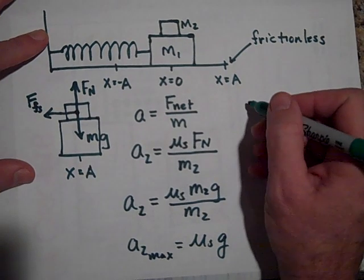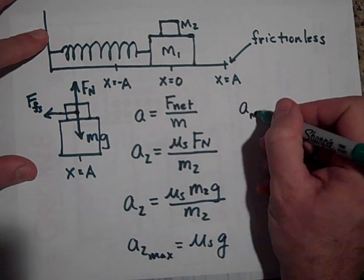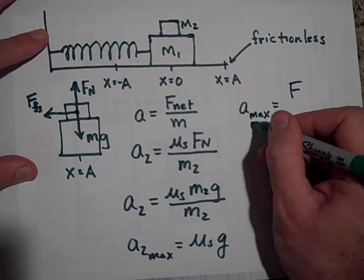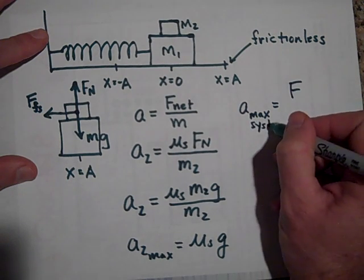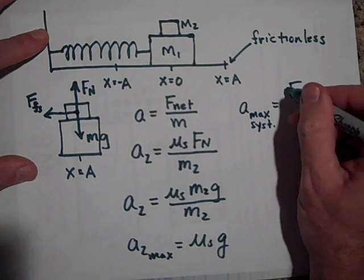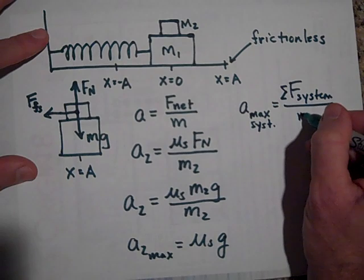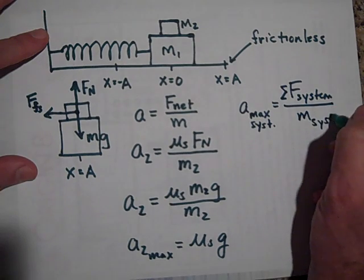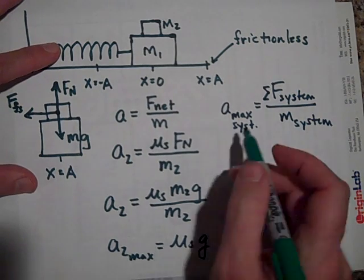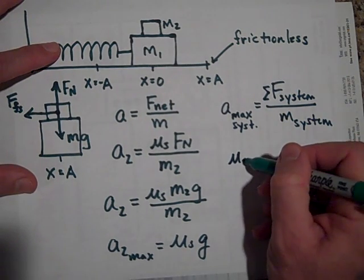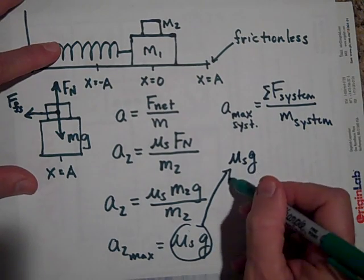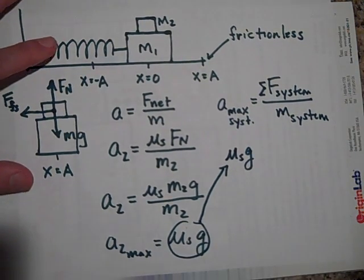I'm going to say A_max for the system will equal the net force on the system over the mass of the system. So the A_max of the system is μs times g—I'm getting that from here, just bringing that over. So that's μs times g.